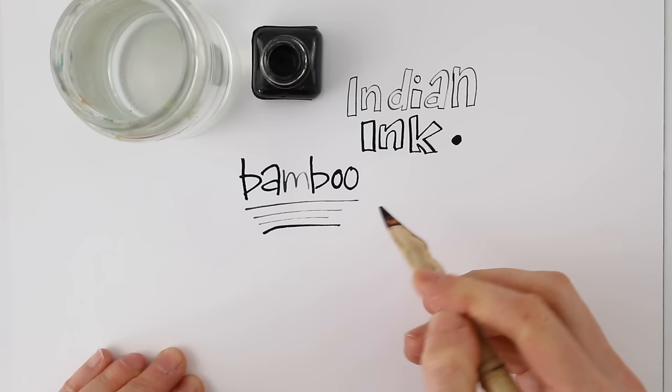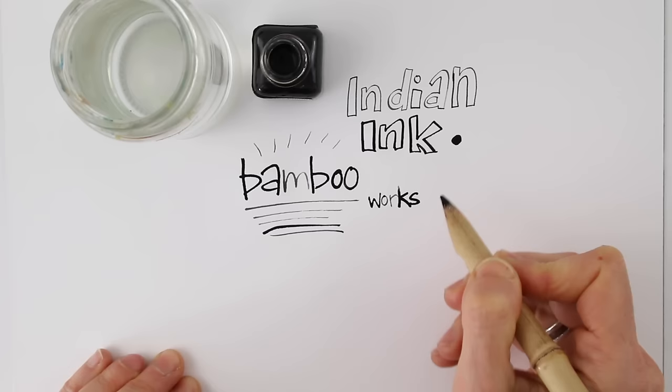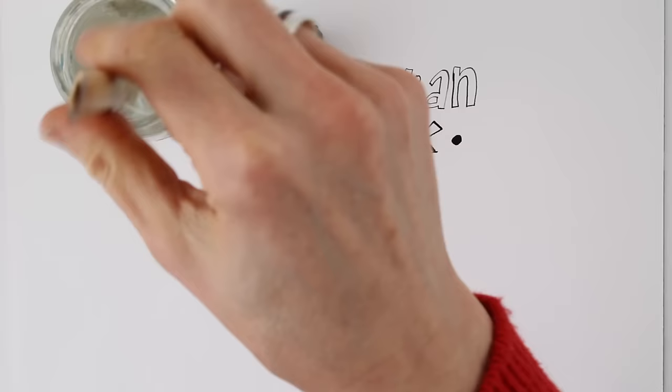And when the ink runs out, the dryer lines are really nice too. It's a bit like charcoal. You can use the tip upside down as well if you want thinner lines.